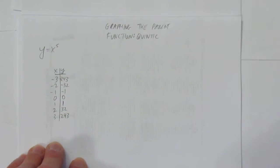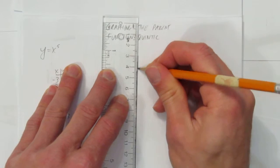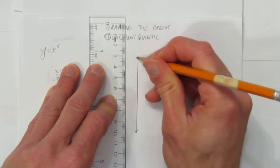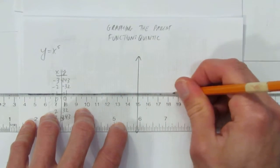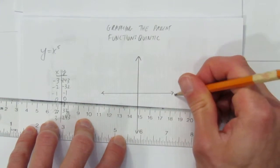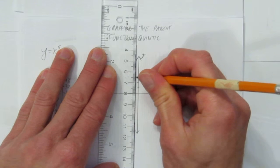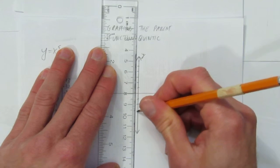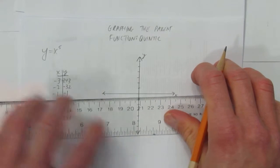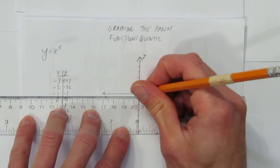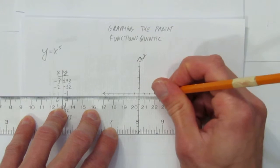So we have a table for our parent function, and we want to graph it. It's going to be pretty hard to graph all the way up to 243 and make it visible. So I'm probably not going to graph the x equals 3 or x equals negative 3 values. I think I'll just graph from negative 2 to 2.